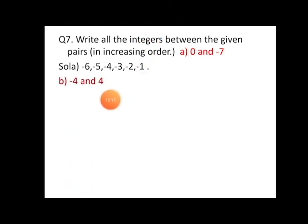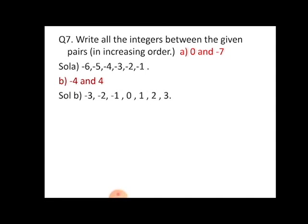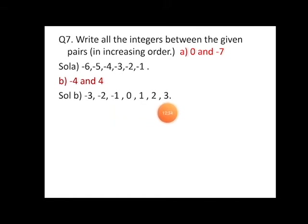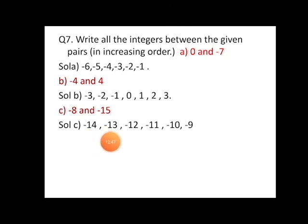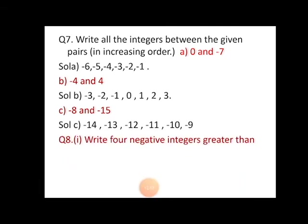Next pair: minus four and four. The integers between them in increasing order are: minus three, minus two, minus one, zero, one, two, and three. For minus eight and minus fifteen, the integers between them are: minus fourteen, minus thirteen, minus twelve, minus eleven, minus ten, and minus nine.